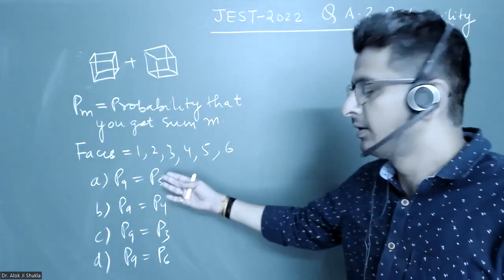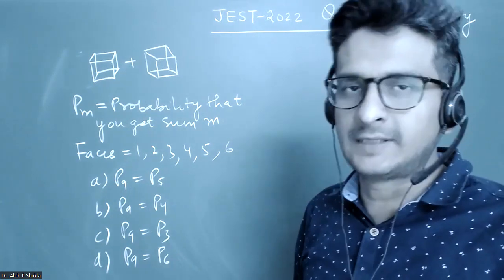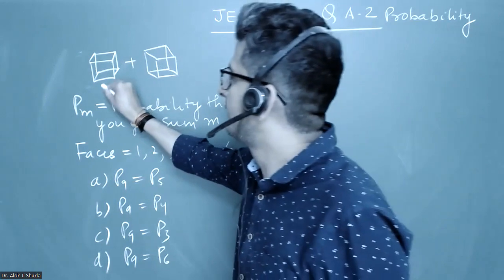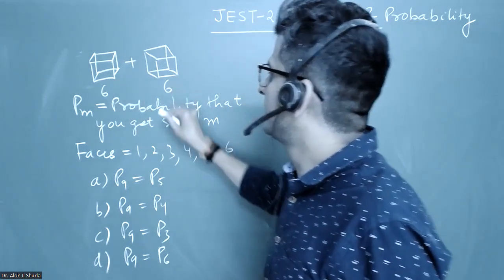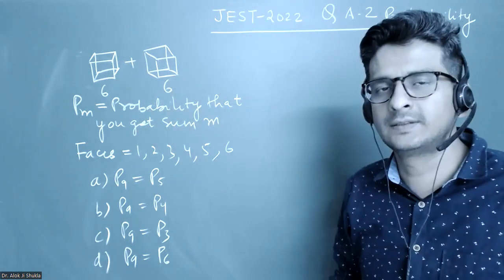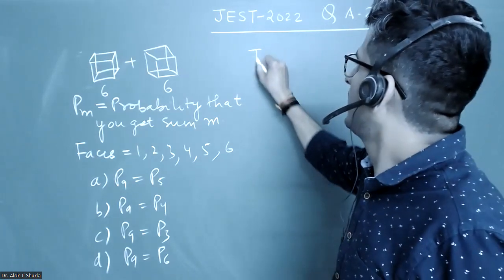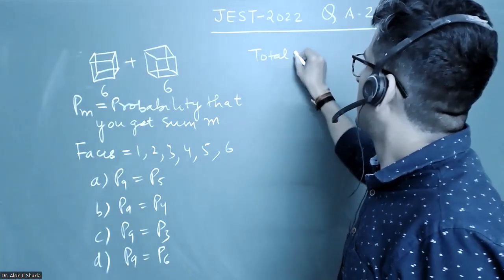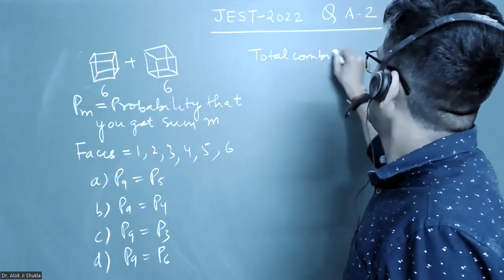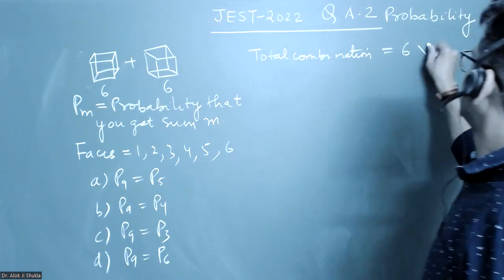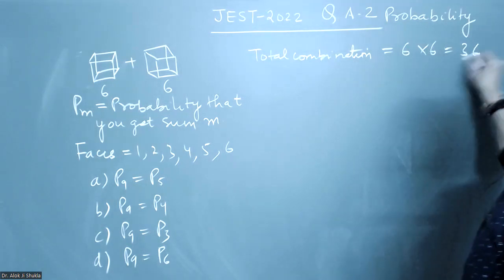We have to tell which of the two probabilities are the same. So if you have six faces here, six faces here, and you're throwing the two dice, how many combinations do you get? Total combinations will be 6 in the first die and 6 in the second, so that equals 36.